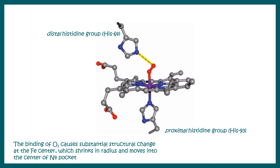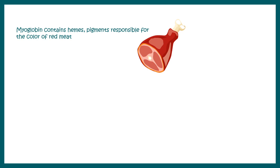Looking at the heme group in detail, we see two distally protruding histidine residues: histidine 64, known as the distal histidine, and histidine 93, known as the proximal histidine. The proximal histidine directly makes coordinate bonds with the heme ring, whereas the distal histidine makes an interaction with oxygen.